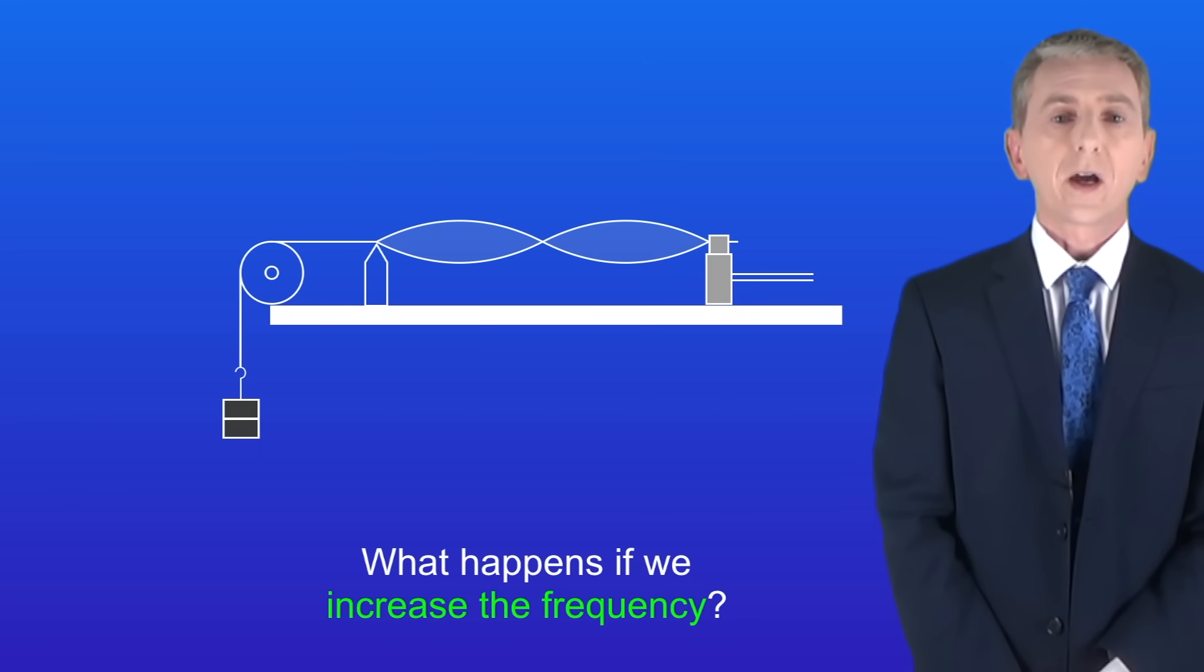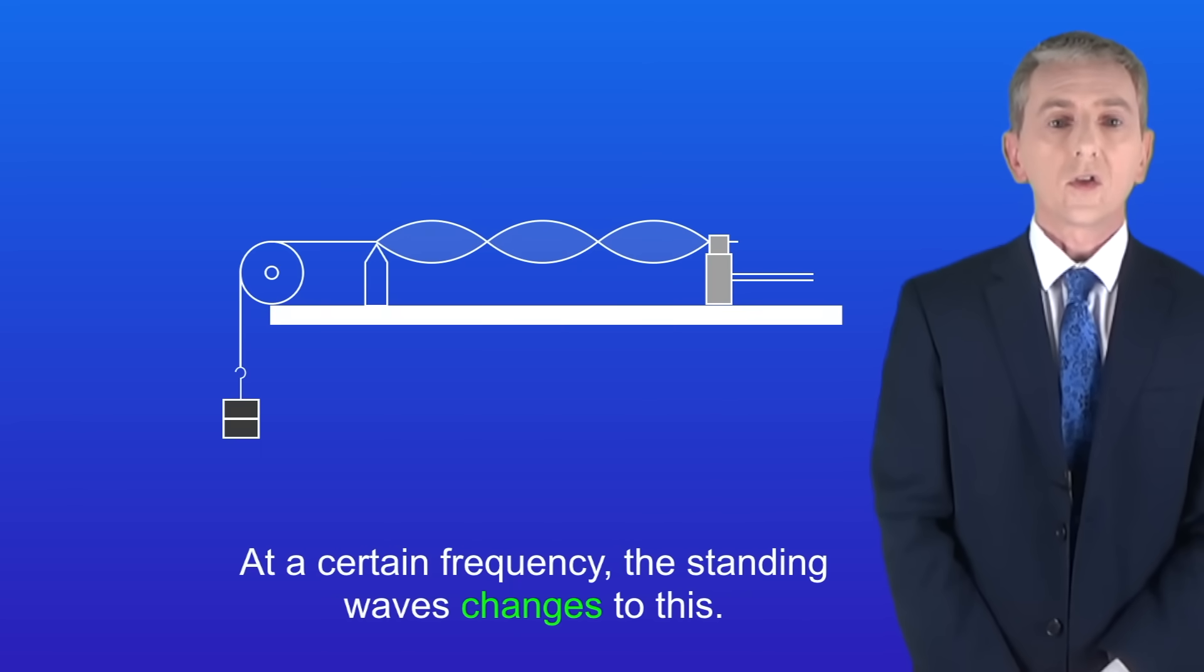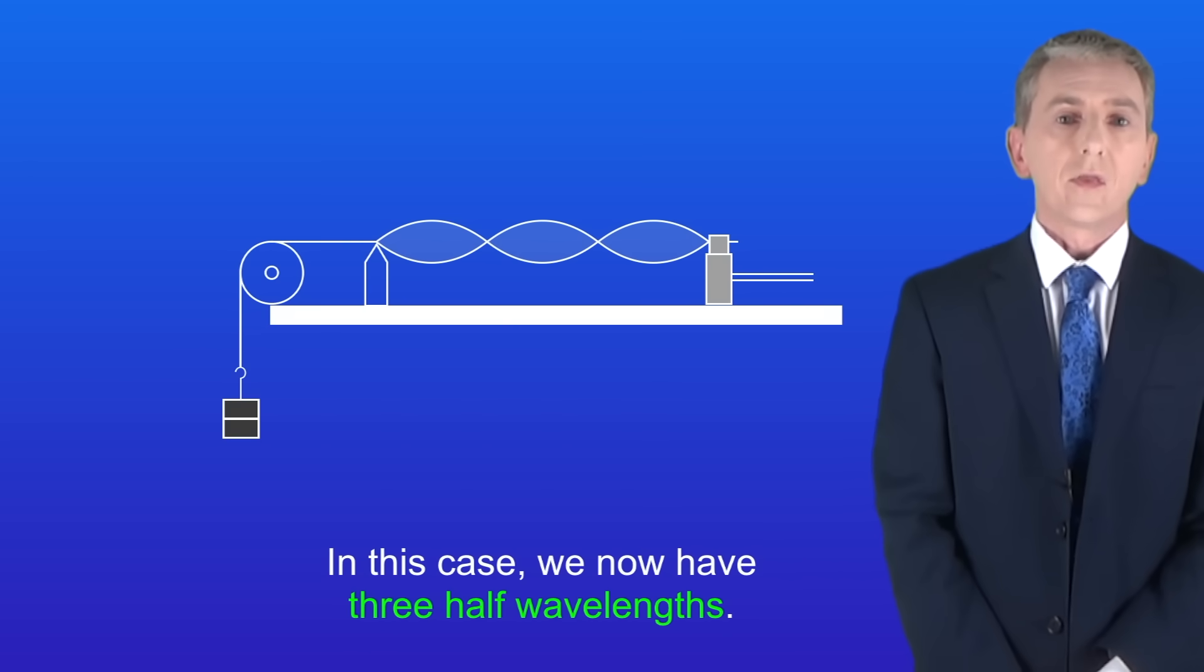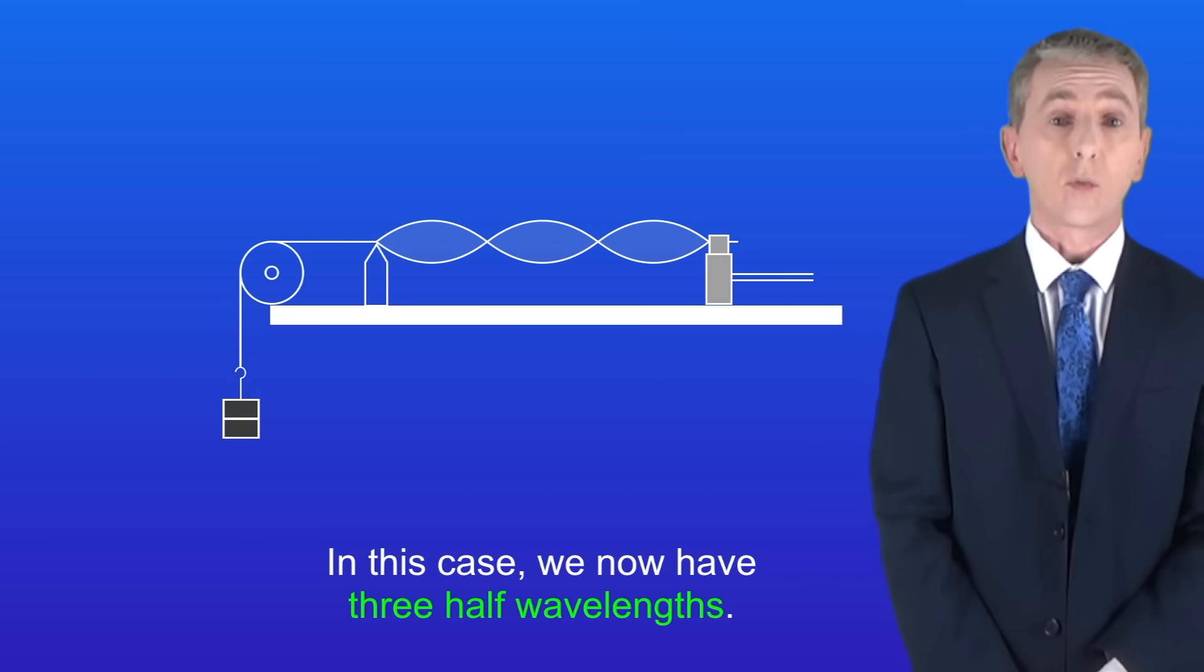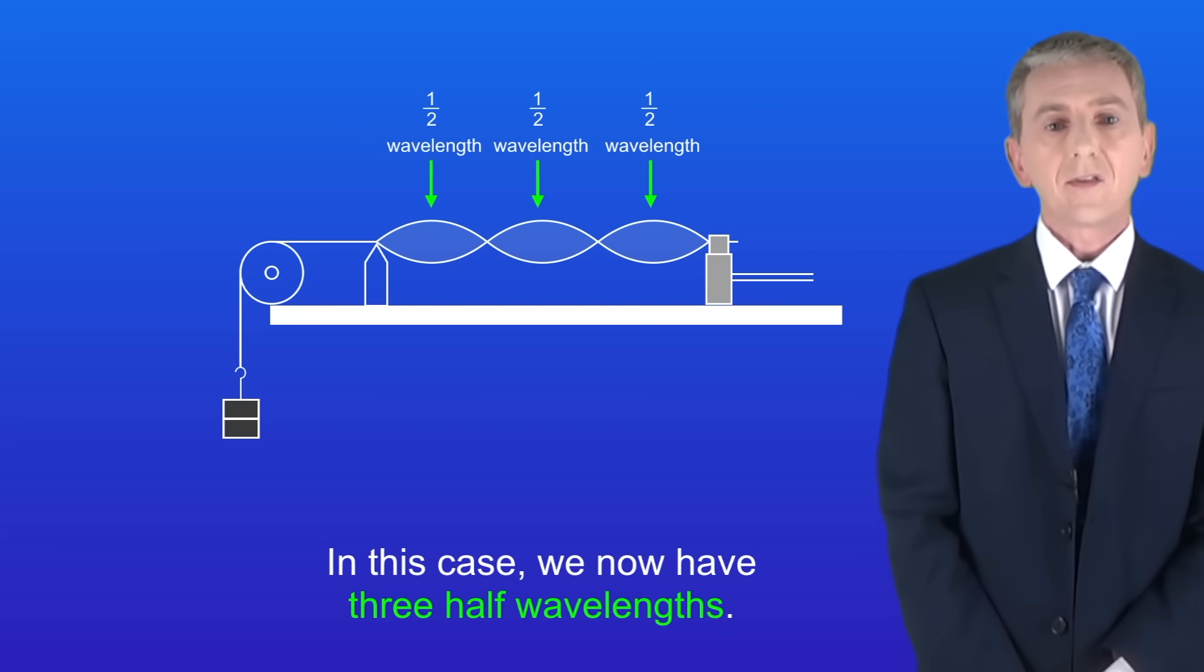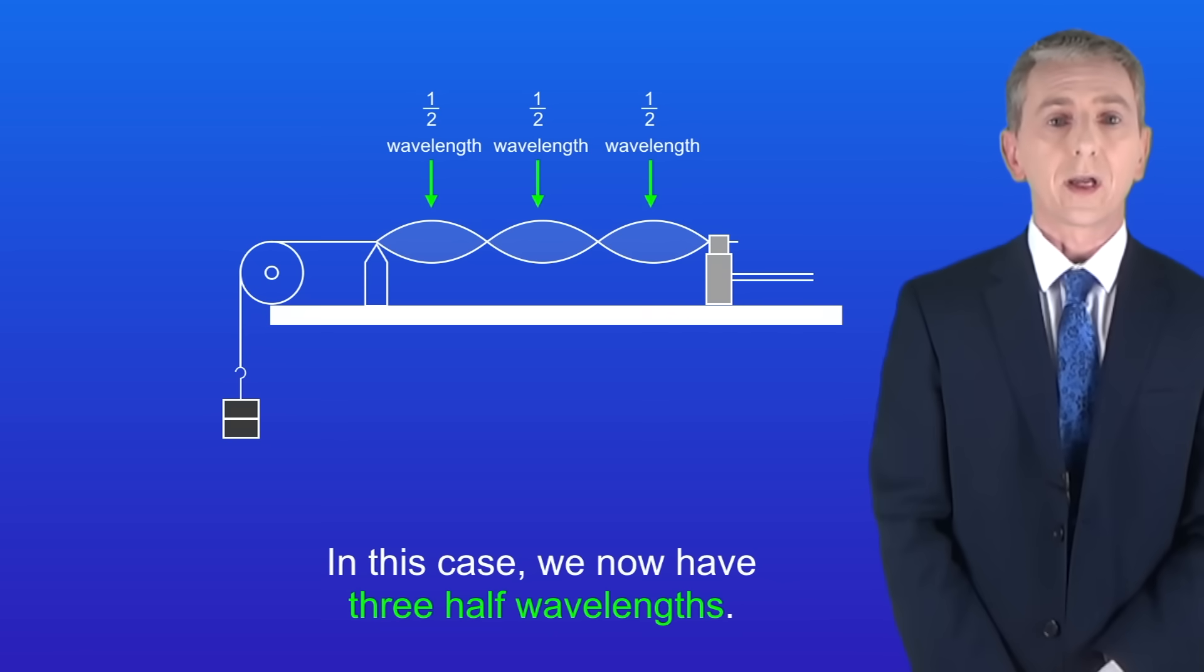Now if we go back to our standing wave what happens if we increase the frequency? Well at a certain frequency the standing wave changes to this. In this case we now have three half wavelengths and I'm showing those here. Now it may seem strange having half a wavelength but that is possible on a standing wave like this.